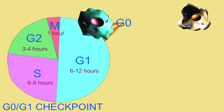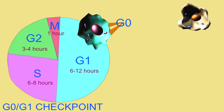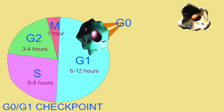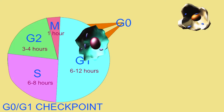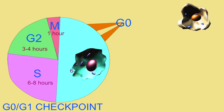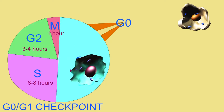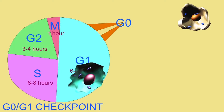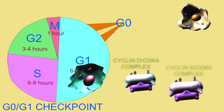The green cell, on the other hand, will pass this checkpoint and after which commit to duplicating its DNA and to another cell cycle. The dividing cell has been stimulated to produce cyclin D, which is a signal to enter G1.